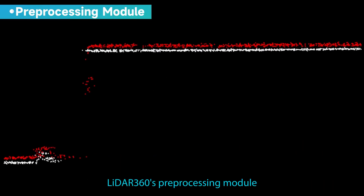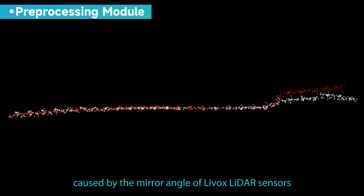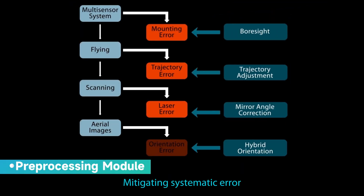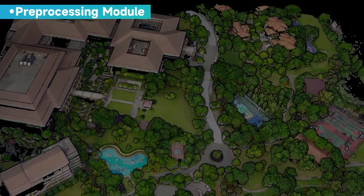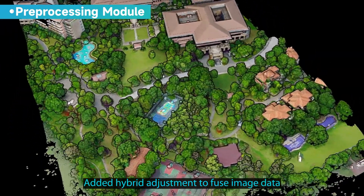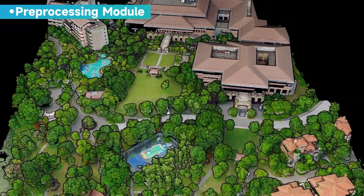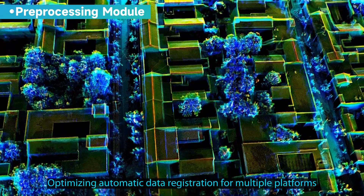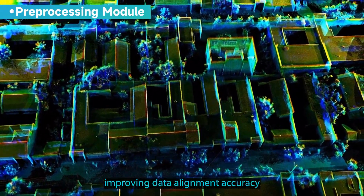LiDAR 360's preprocessing module provides a solution for point cloud vertical offset errors caused by mirror angle of LiVox LiDAR sensors. Mitigating systematic error, placement error, and trajectory error in one stop. Added hybrid adjustment to fuse image data, enhancing overall quality. Optimizing automatic data registration for multiple platforms, improving data alignment accuracy.